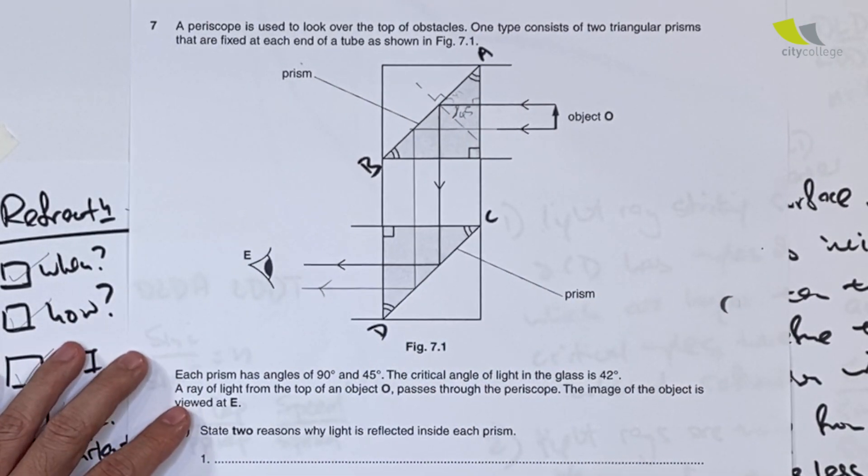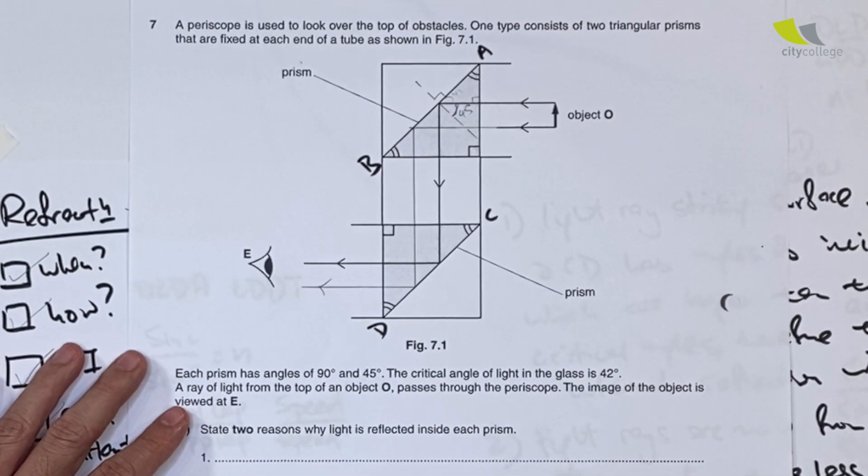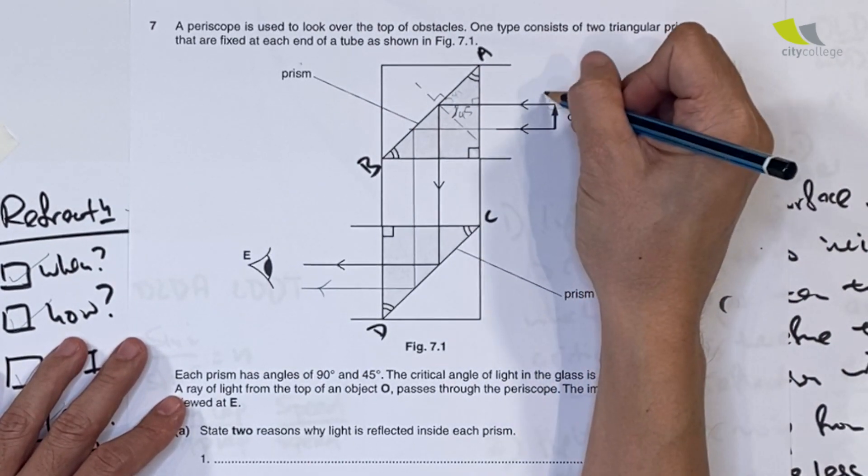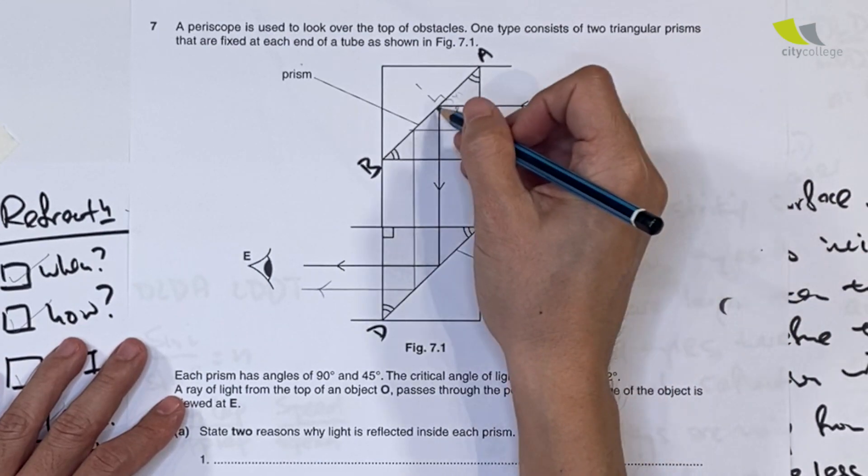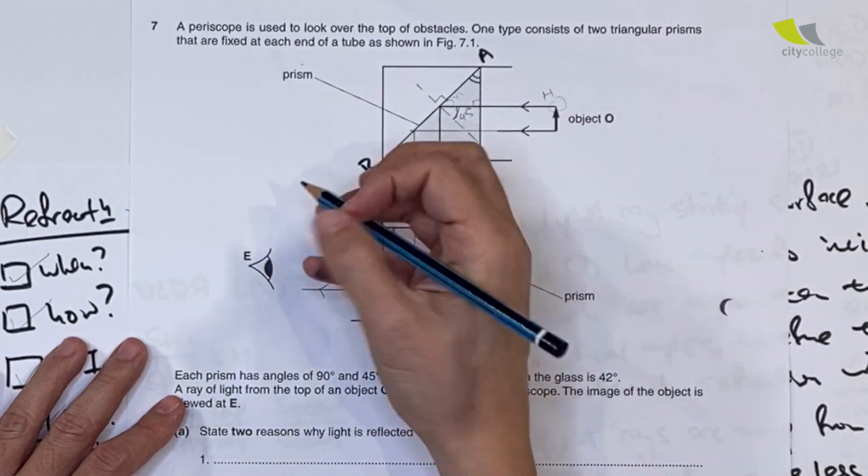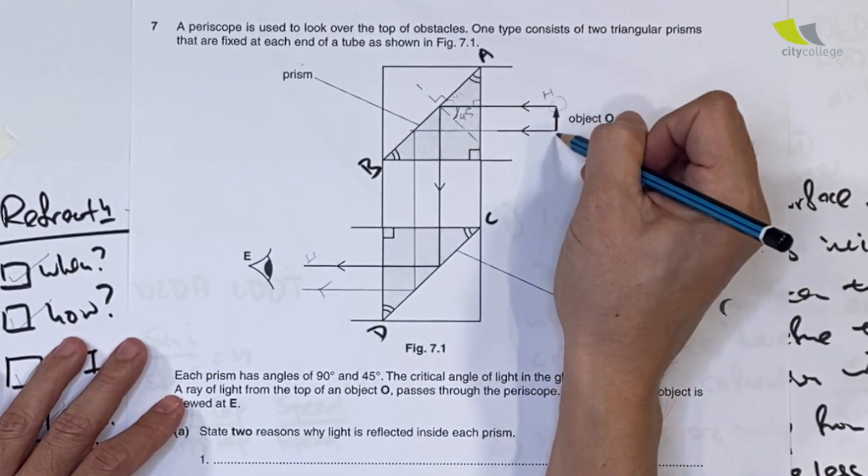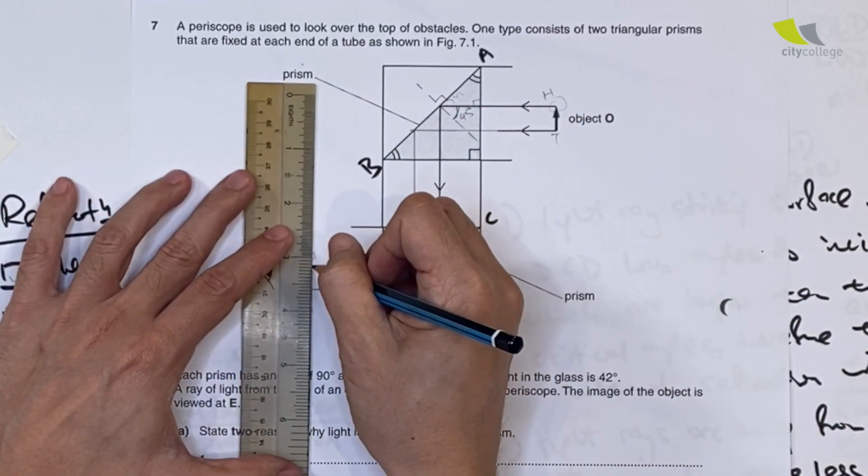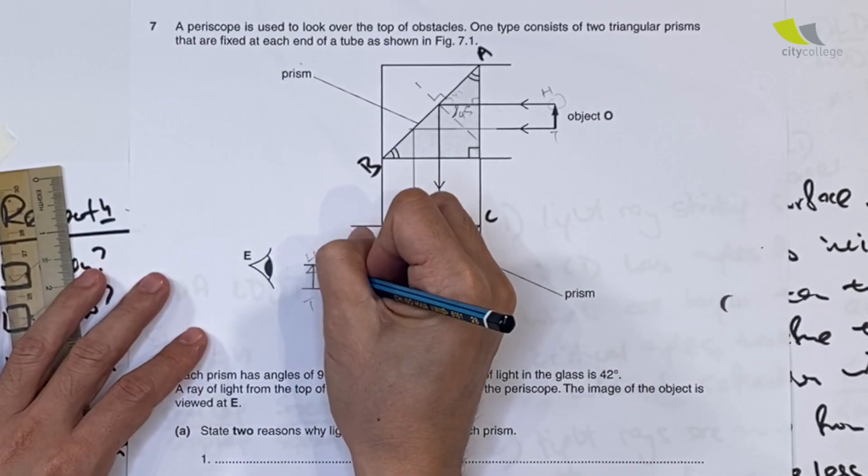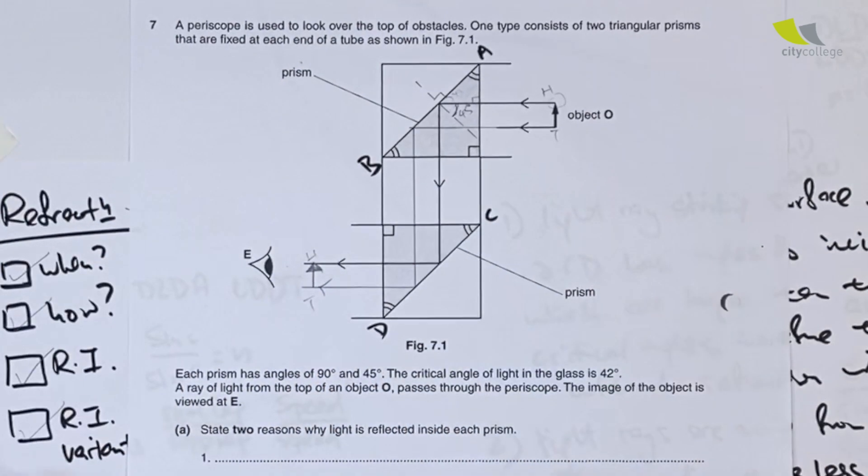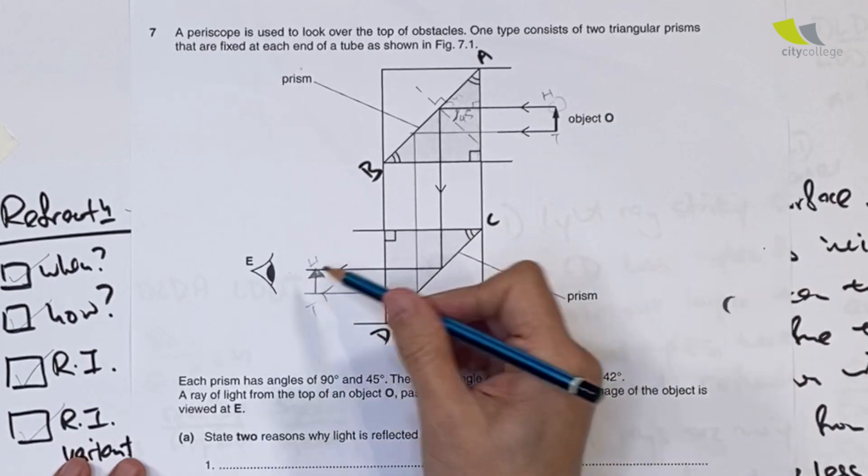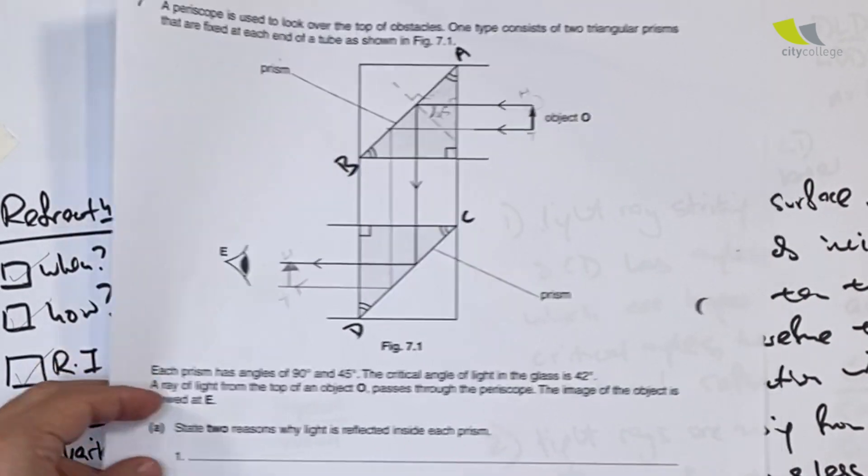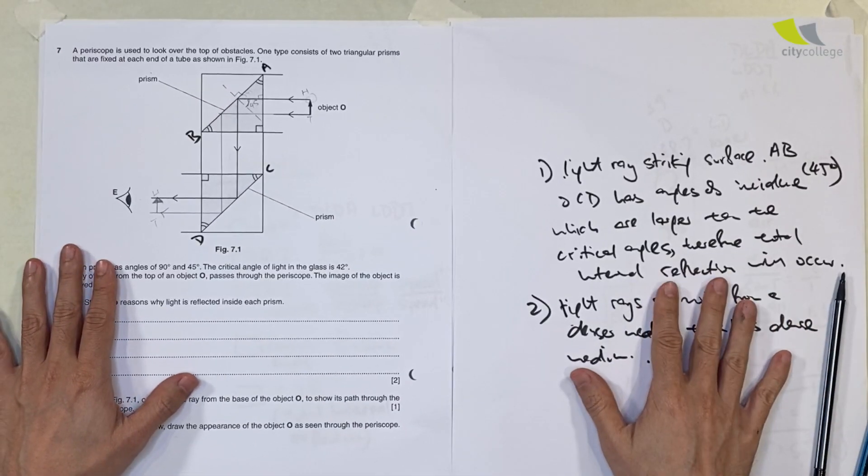In the space provided, draw the appearance of the object as seen through the periscope. This ray matches the arrowhead, so I'm going to draw H here. H is still on top. It's the tail here. Your image must still be like this. They're checking whether you know it's an upright image or an inverted image. That's it for refraction.